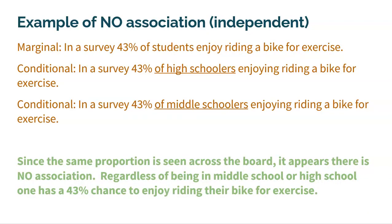Let's look at an example where we see no association, just so we understand. No association means independence — the two variables are not related and the outcome of one has nothing to do with the other. You need numbers to prove this. So here are the marginal totals.